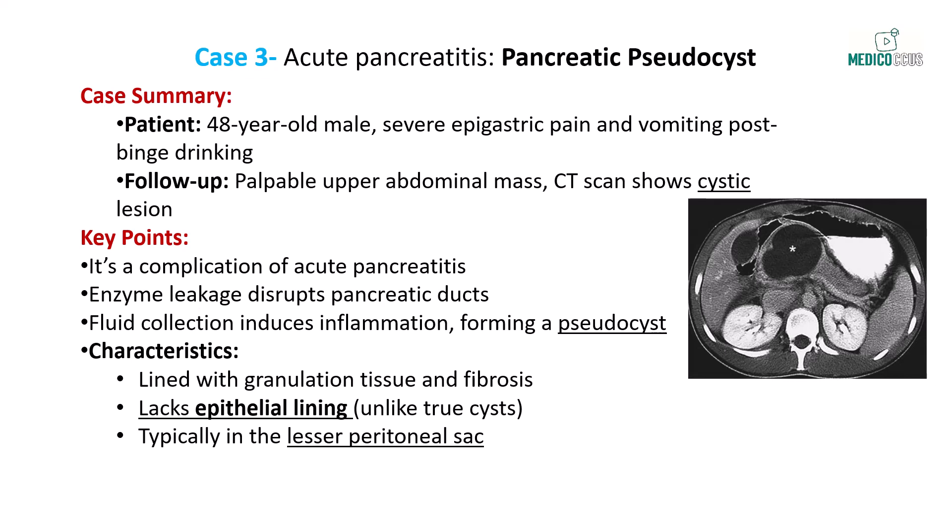Let's consider the case of a 48-year-old male admitted to the hospital with severe epigastric abdominal pain and vomiting following an episode of binge drinking. Four weeks after the initial event, he presents with a palpable upper abdominal mass. A CT scan reveals a cystic lesion in the upper abdomen, marked by an asterisk in the provided image. This lesion is most likely a pancreatic pseudocyst, a common complication of acute pancreatitis. The proteolytic enzymes can disrupt the walls of the pancreatic ducts, causing leakage of pancreatic secretions into the surrounding peripancreatic space. This fluid, rich in pancreatic enzymes, triggers an inflammatory response in the surrounding tissues. Over time, granulation tissue forms around this fluid collection, encapsulating it and leading to the formation of a pseudocyst.